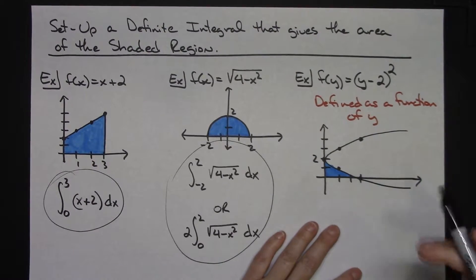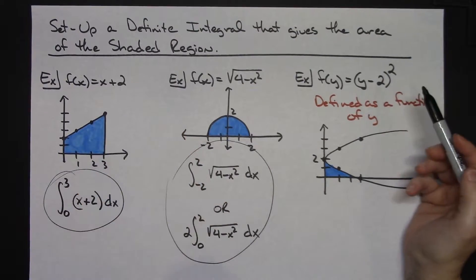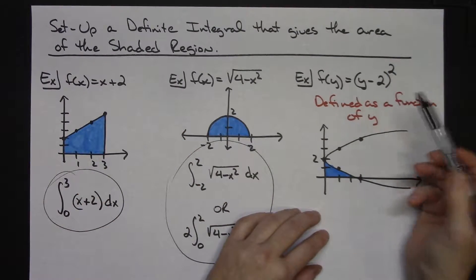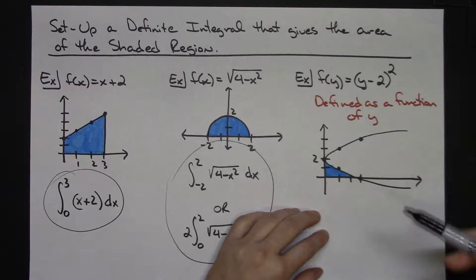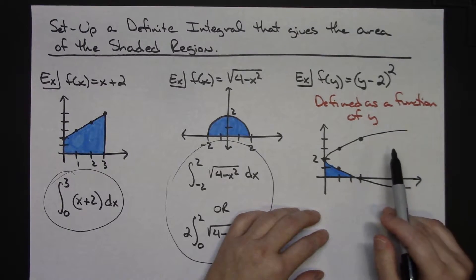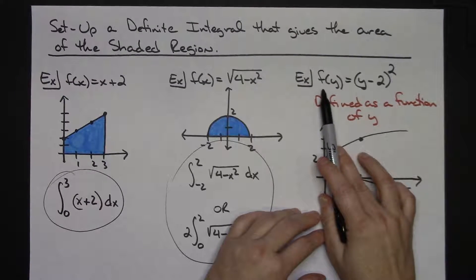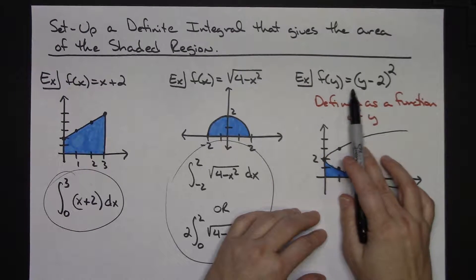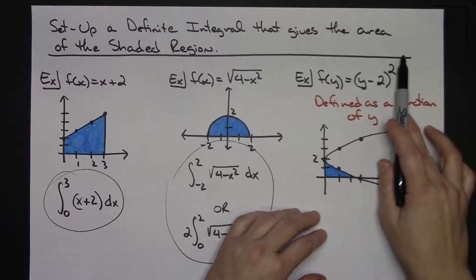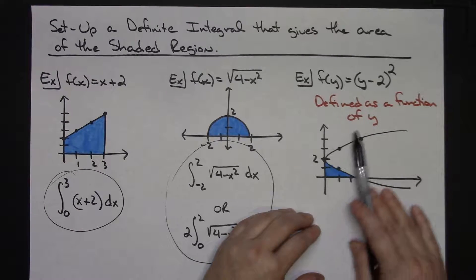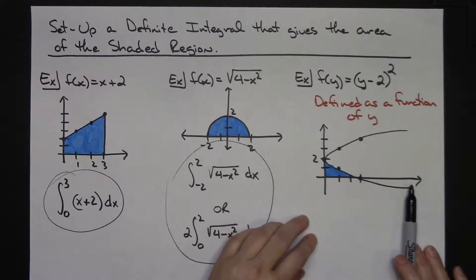Now, in this last example, we're not always going to have our function defined in terms of x. The farther you go into calculus, the more you're going to see some of your functions defined as a function of y. So we'll do one like this. Let's say I've got f of y, and that's equal to y minus 2 quantity squared. So it turns out to be a sideways parabola.